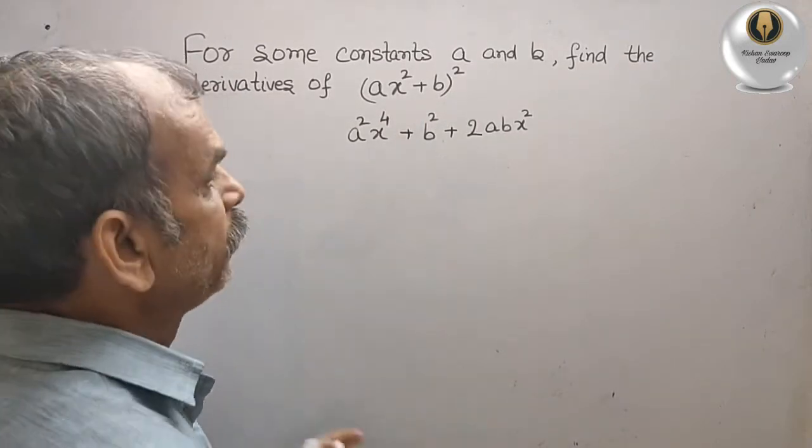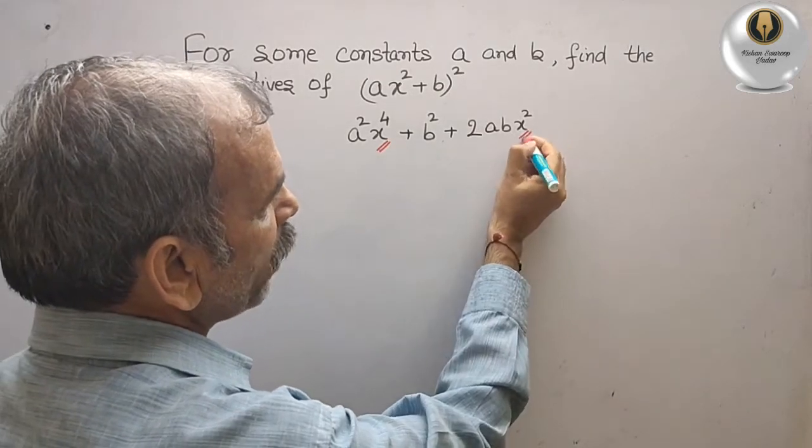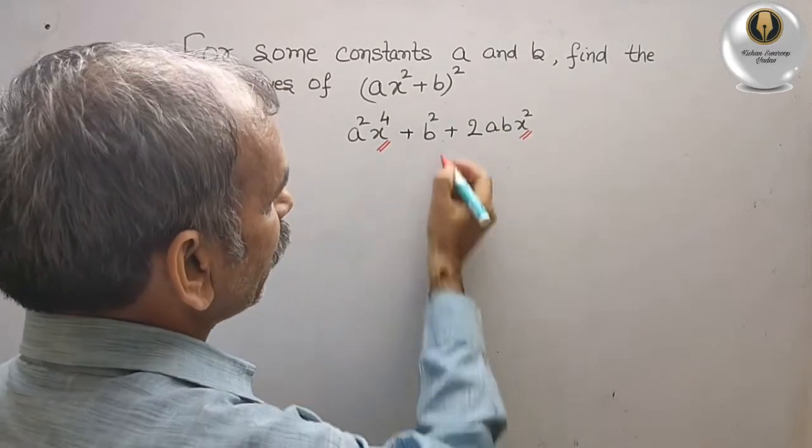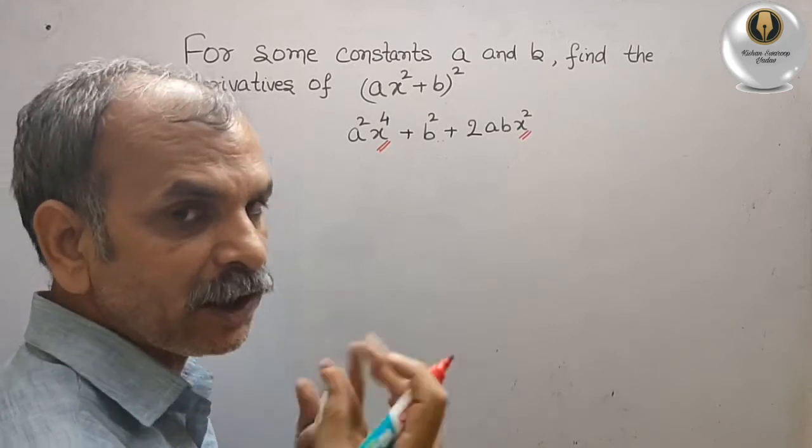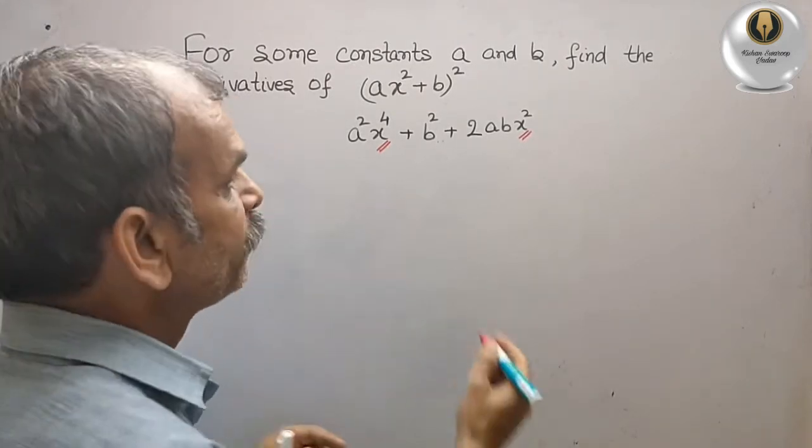You can see here, x to the power of 4 is there, here x to the power of 2 is there (x²), but here there is no x. That means it's x to the power of 0.